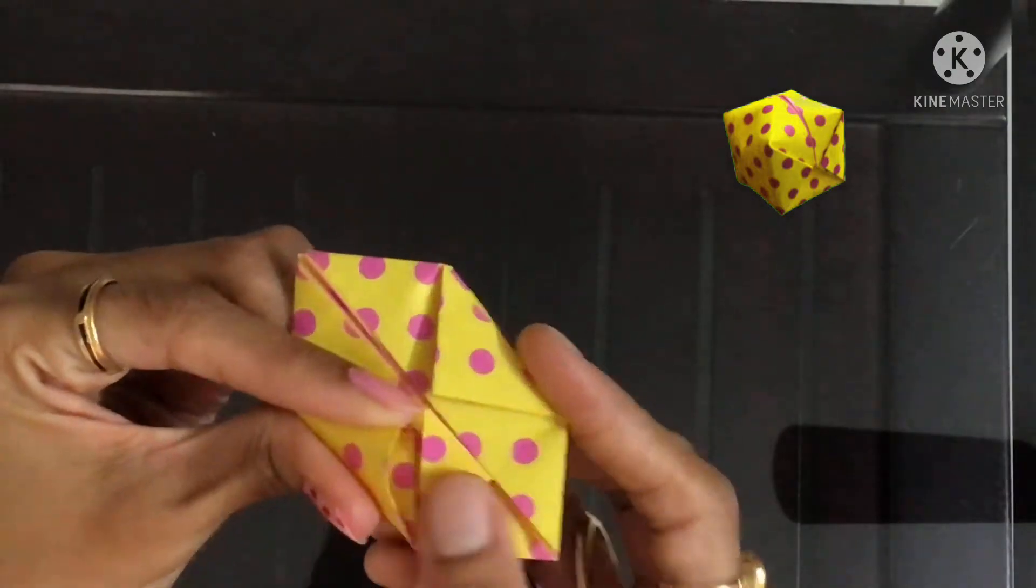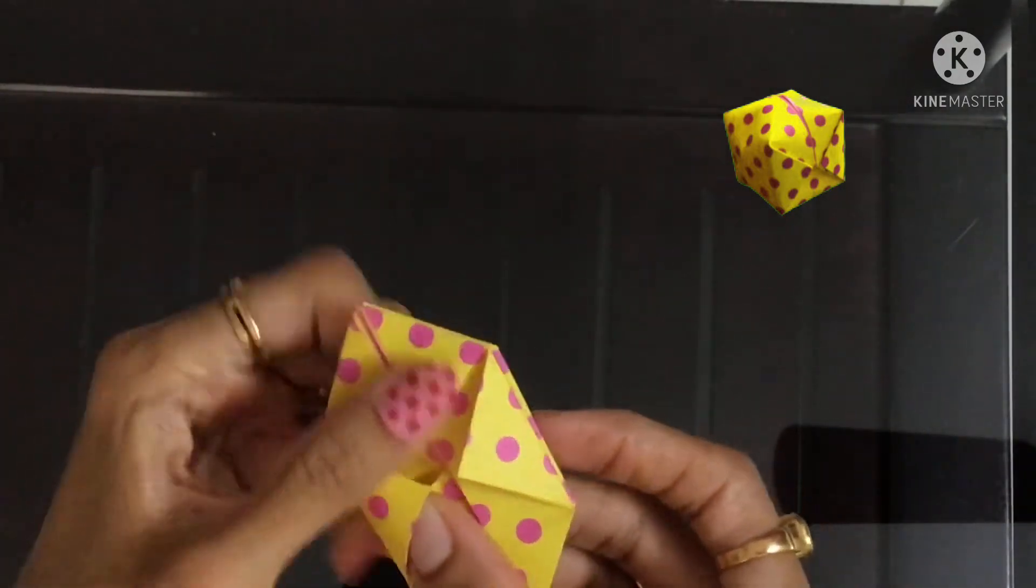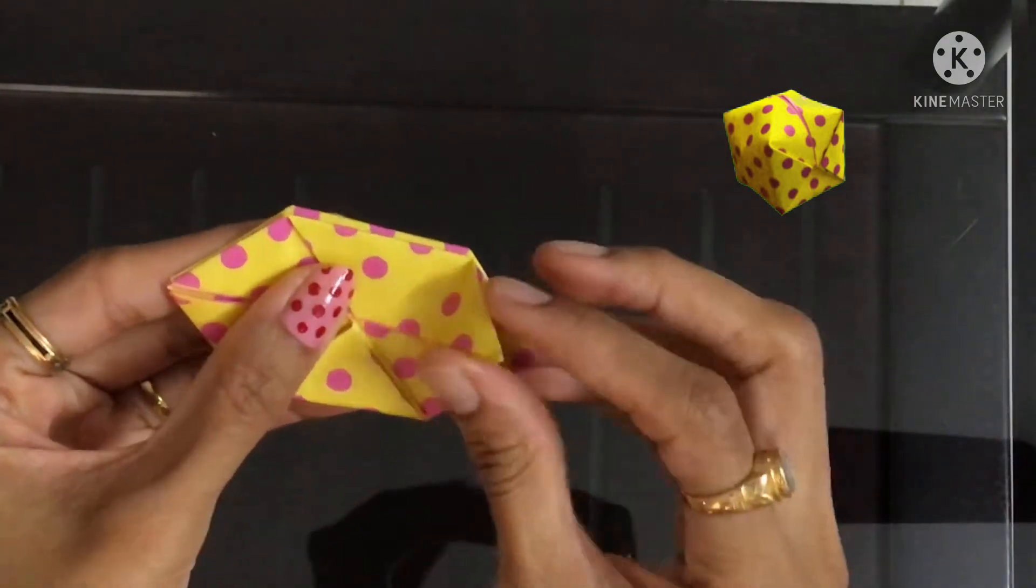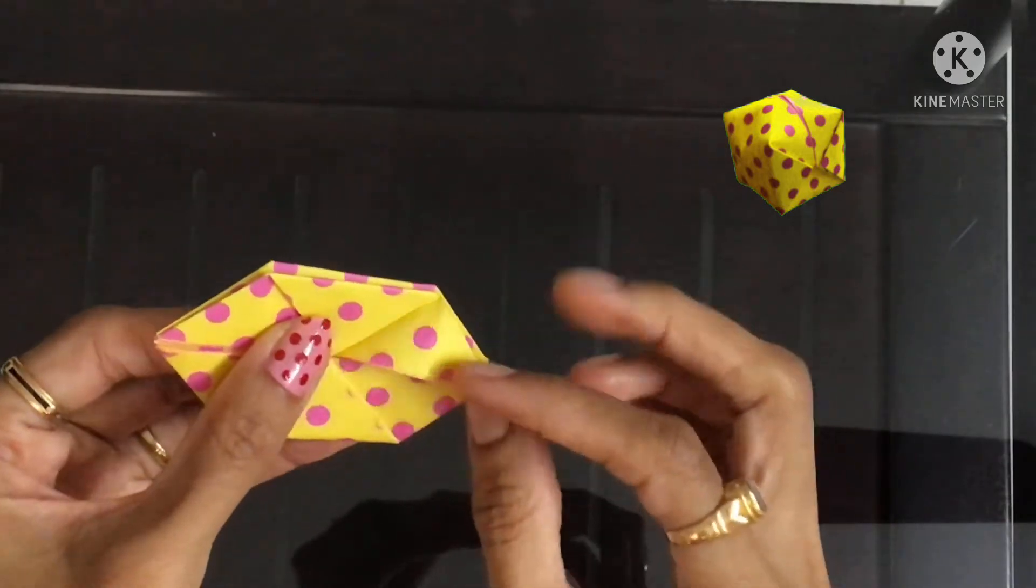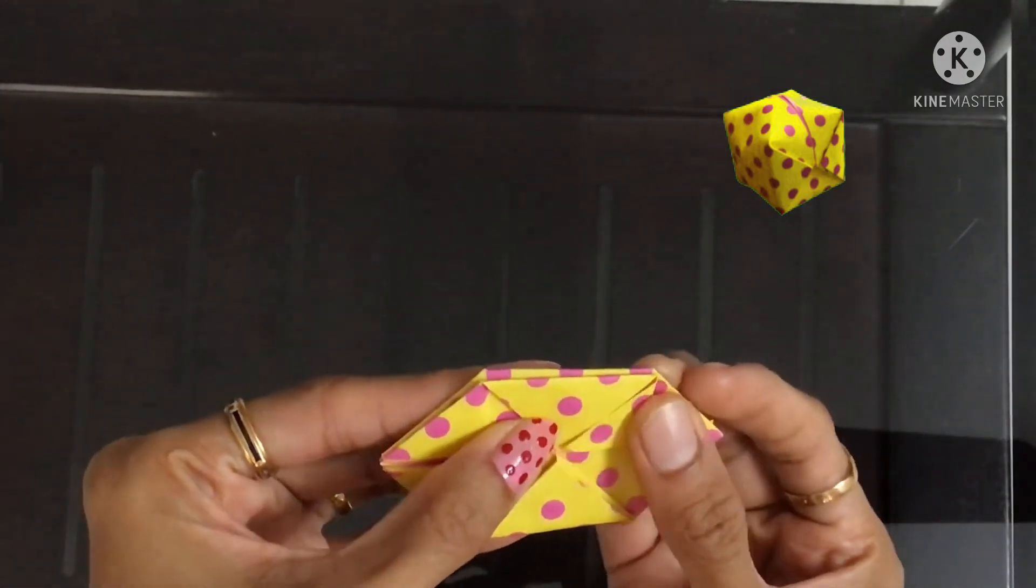Open a small triangle here. You can find a pocket here where you can tuck in the flap like this, and then press it firmly. Follow the same steps for all four flaps.